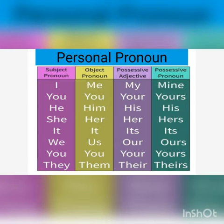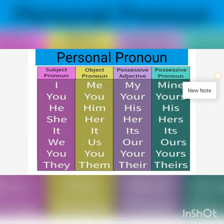Words like I, you, he, she, it, we, they — they point towards a particular object or person, so those are subjective pronouns. Me, him, you, her, it, us, them — these are objective pronouns.